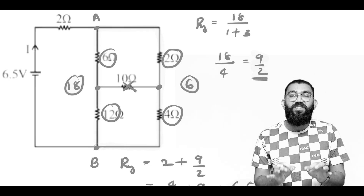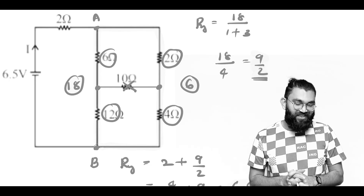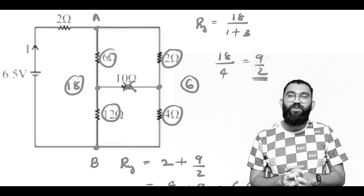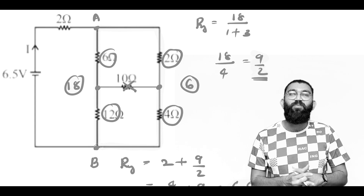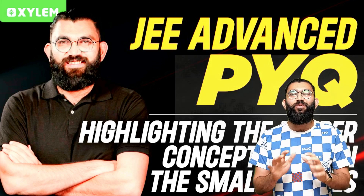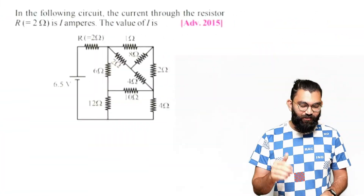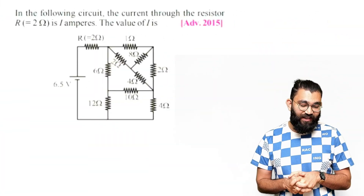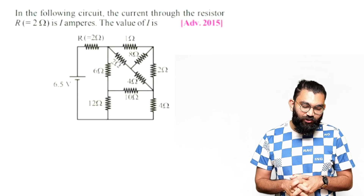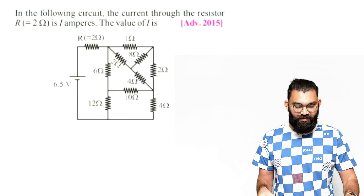The placement of Wheatstone bridge in this advanced question is really interesting, and you can solve the effective resistance of the network easily by applying the concept of balanced Wheatstone bridge. Hi dear students, welcome back to JEE Advanced PYQ question discussion series. Today we have a question from chapter current electricity. In the following circuit, the current through the resistor R equal to 2 ohm is i ampere, where the value of i is what we need to find.